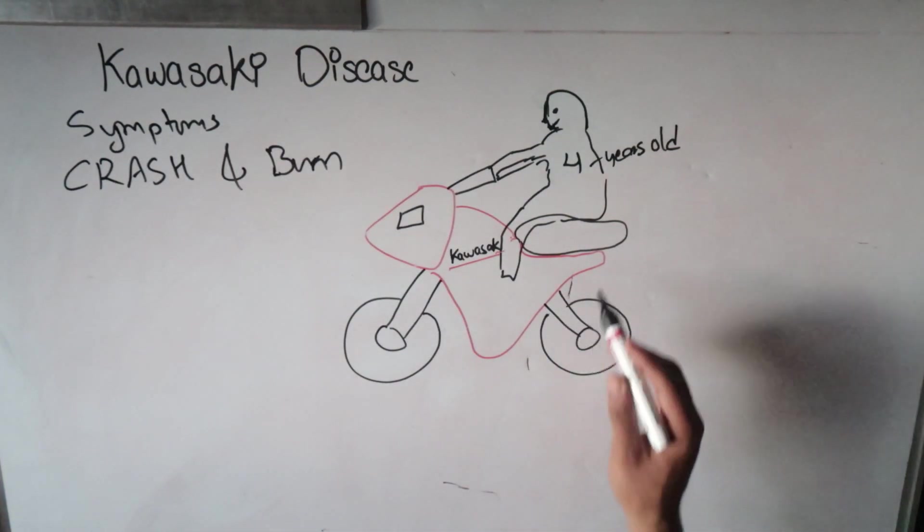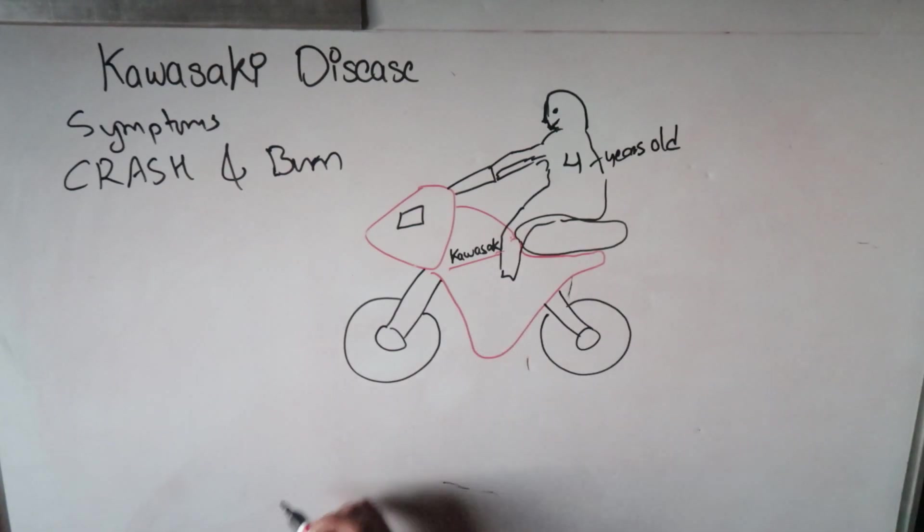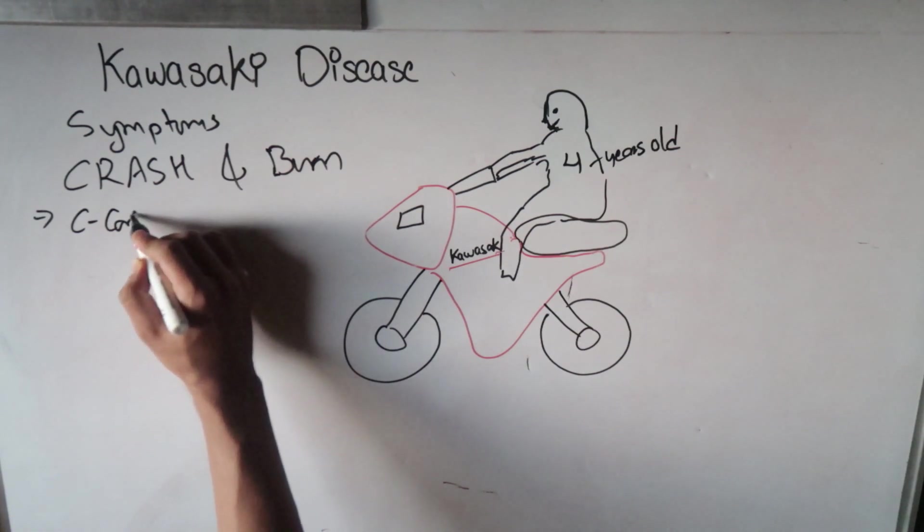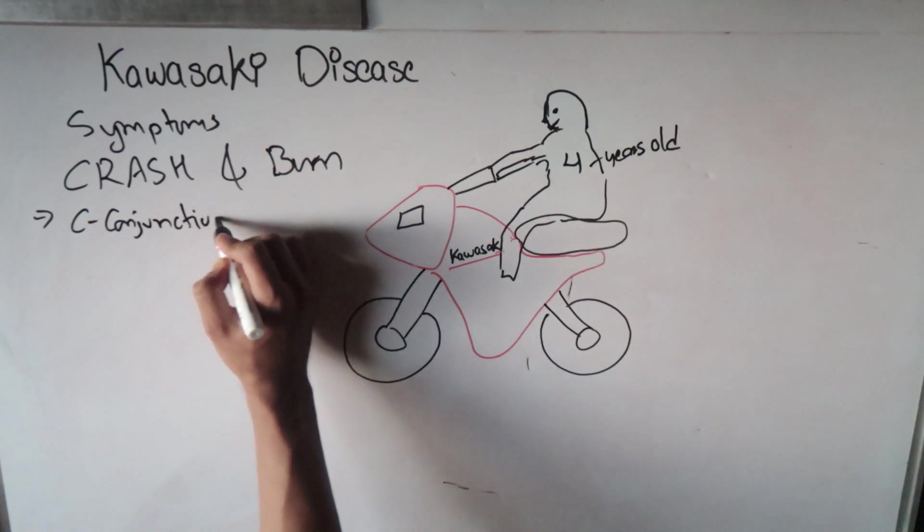Because the four-year-old child cannot ride a bike. Here the C refers to conjunctival inflammation.